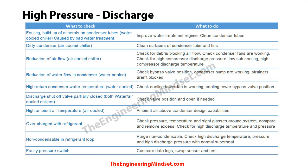It could also be that the discharge shutoff valve is partially closed — uncommon, but worth checking. With air-cooled chillers, it's possible the ambient air temperature is above the condenser's capabilities, meaning it simply can't operate in those conditions. You may need to wait for it to cool down or adjust the chiller's parameters and set points, but check with the manufacturer first.